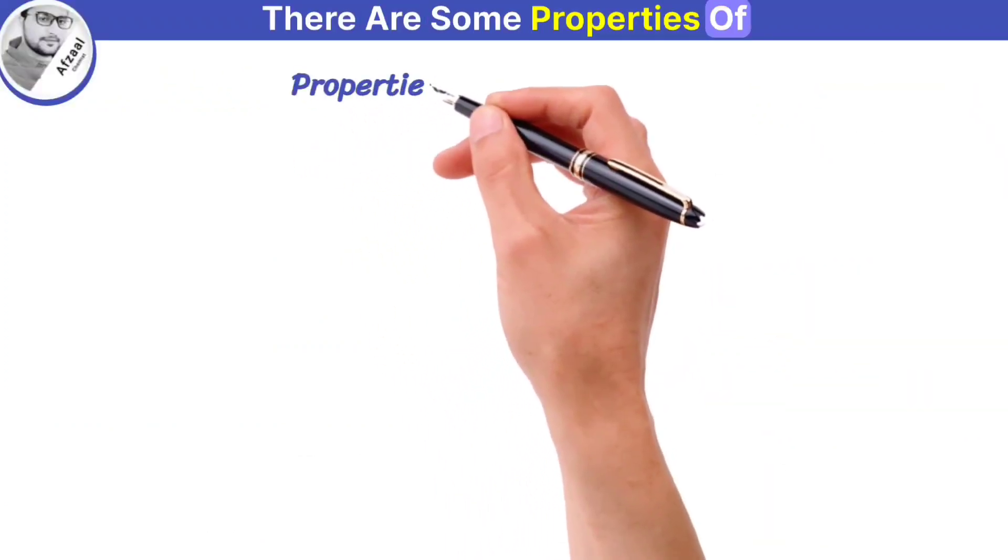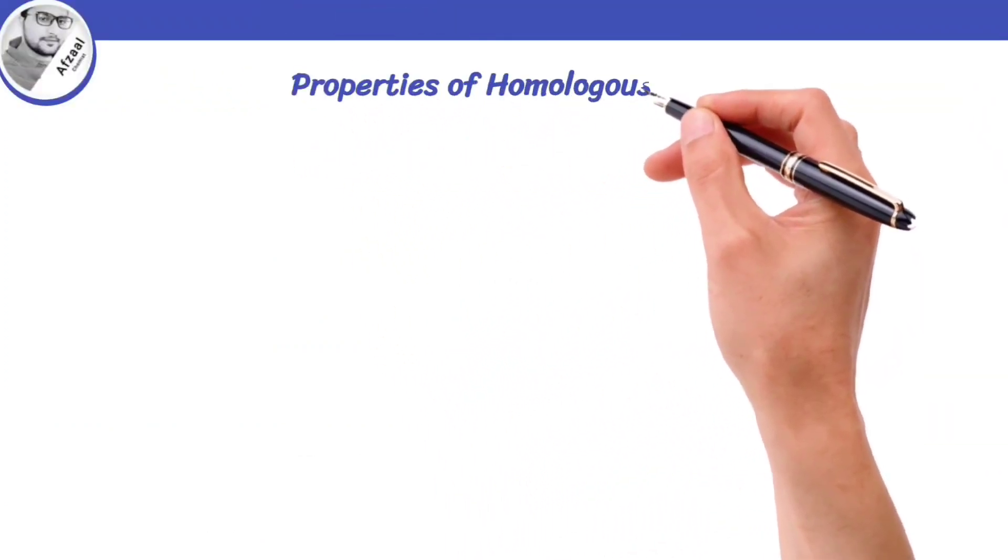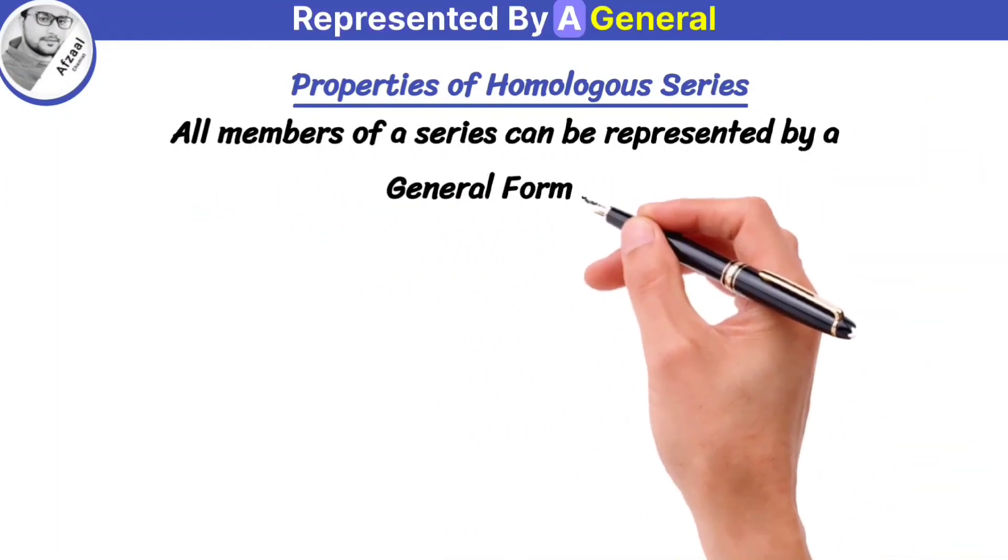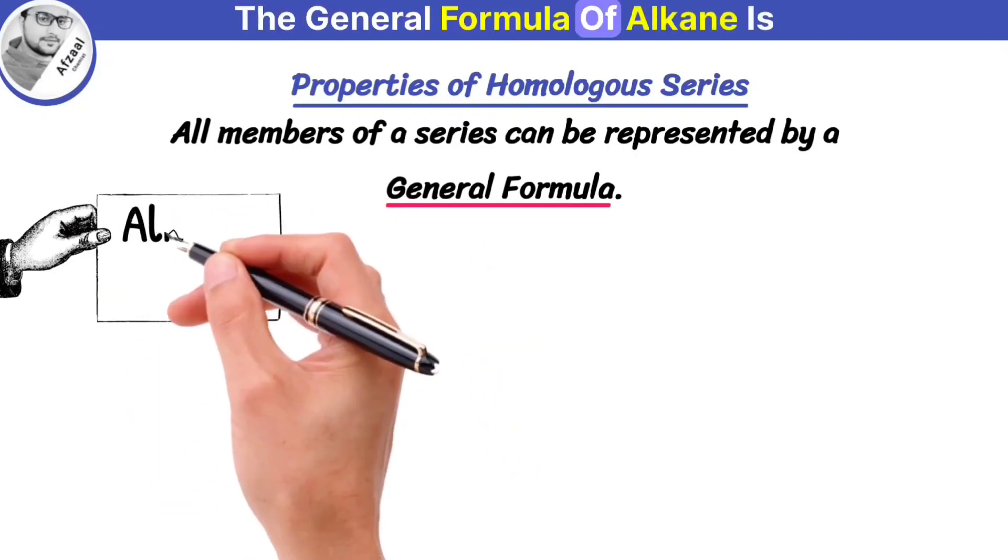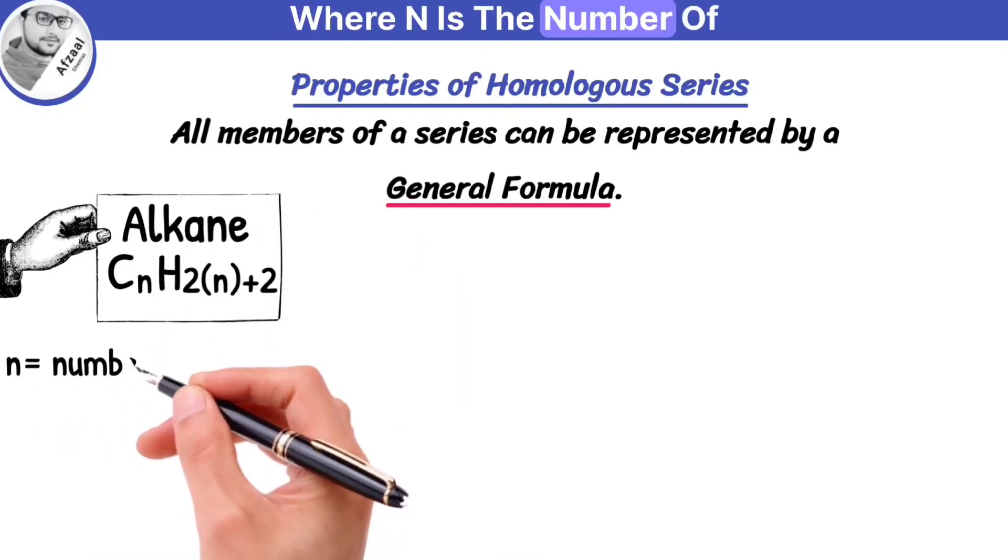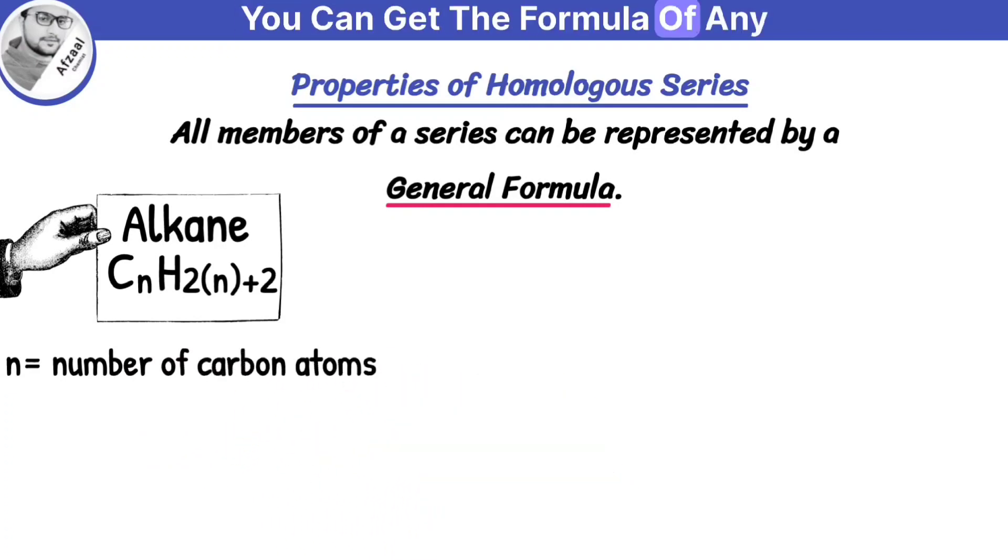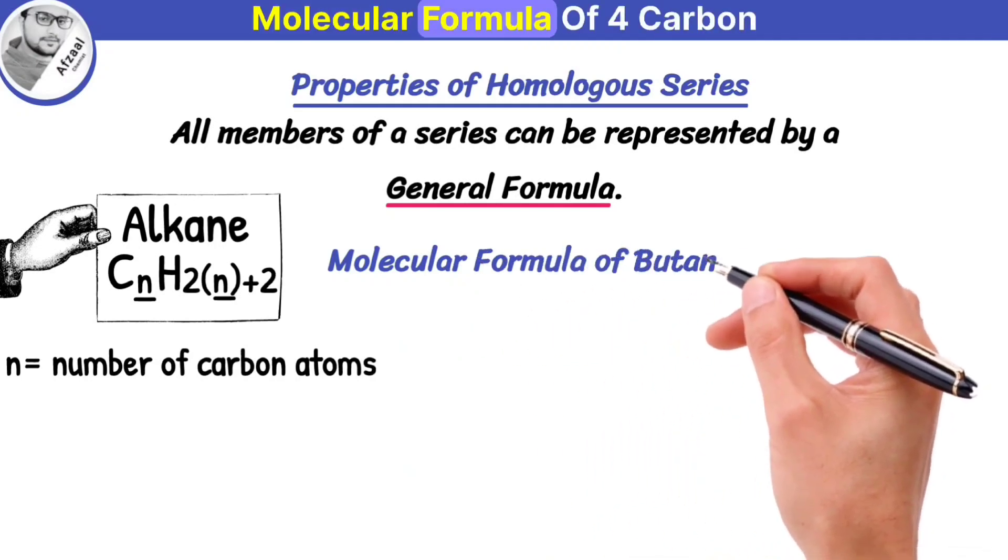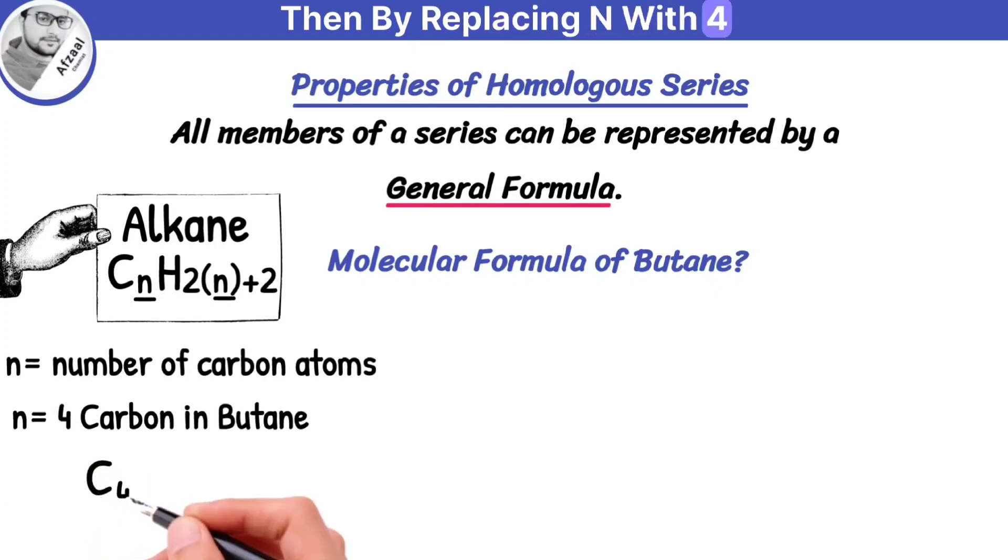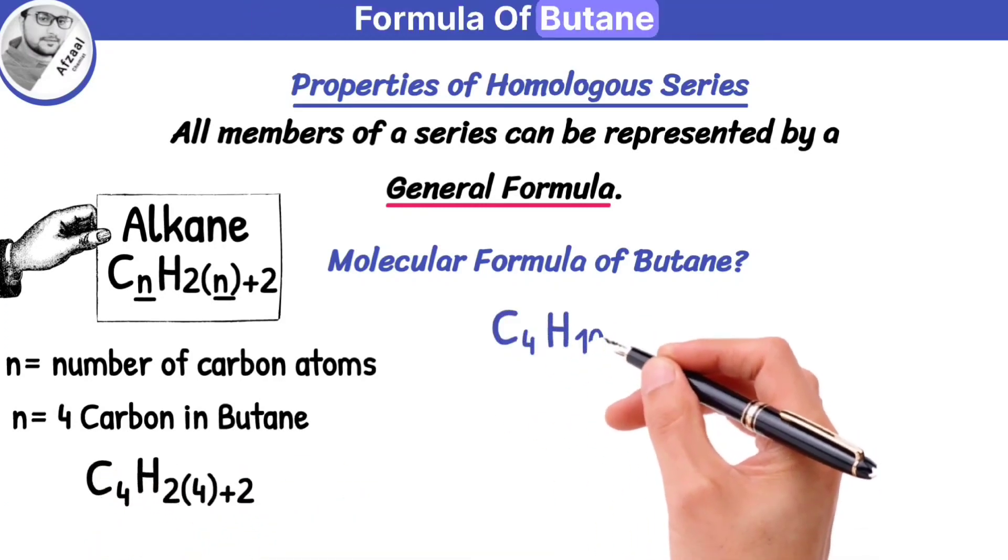There are some properties of organic compounds that are common in a homologous series. All members of the series can be represented by a general formula. For example, the general formula of alkane is CNH2N+2, where N is the number of carbon atoms. You can get the formula of any compound of this series by inserting the number of carbon atoms in general formula. For example, if you want to know the molecular formula of 4 carbon alkane known as butane, then by replacing N with 4 in general formula, you will get formula of butane.